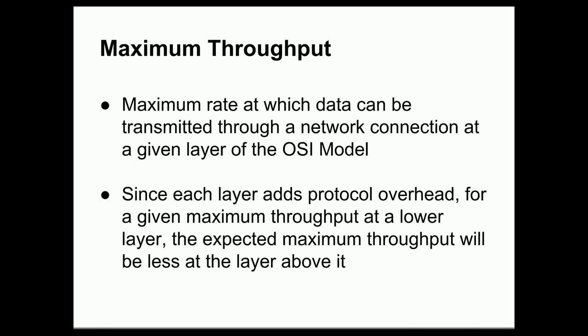Now the maximum throughput of a networking system is the maximum rate at which data can be transmitted through a network connection at whichever layer of the OSI model that we're measuring. So if we're measuring the physical layer, the maximum throughput is the maximum rate at which we can send data through a network connection at or using that particular physical connection, using that particular physical medium. But since each layer of the OSI model adds a certain amount of protocol overhead, in other words it transmits some extra data added on to the data that we actually would like to send, for a given maximum throughput at a lower layer, the expected maximum throughput as we're going to see it will be less at the layer above it.